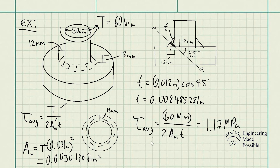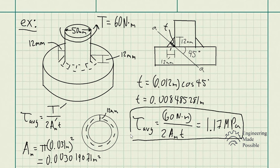Plugging everything in, the average shear stress in the fillet weld is 1.17 MPa. This demonstrates how the average shear stress equation with the mean cross-sectional area and thickness can be applied to fillet welds subjected to torsion — a very practical real-world application.